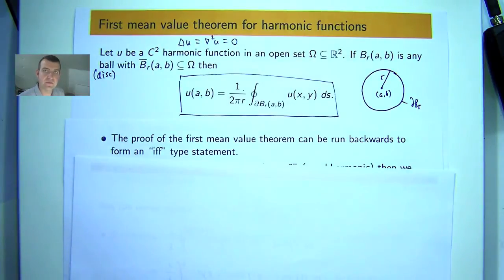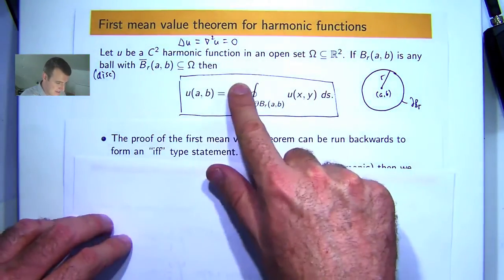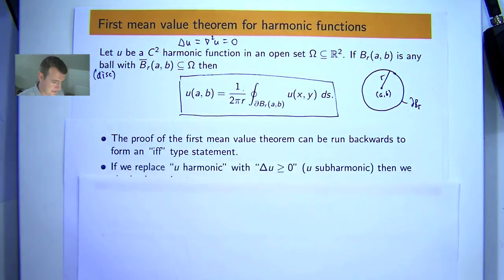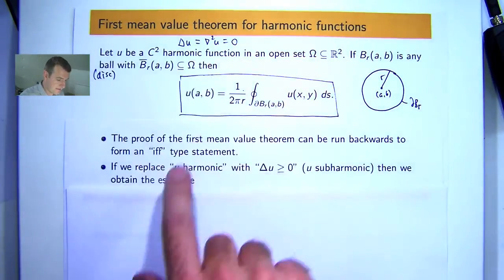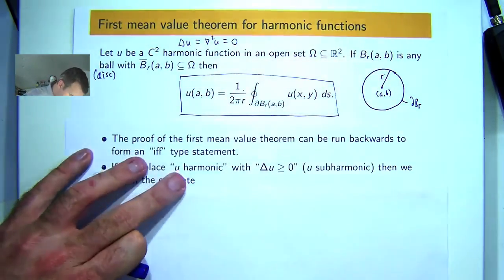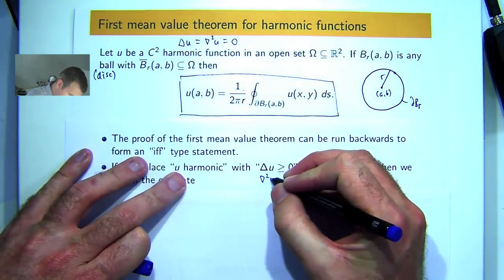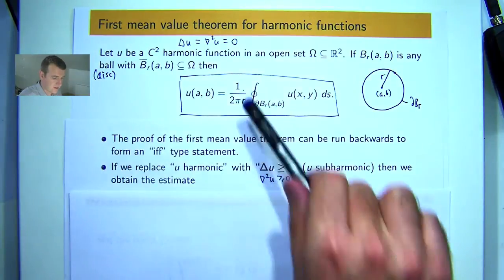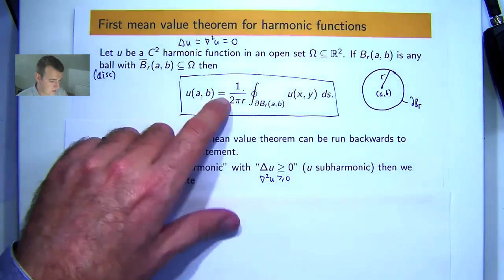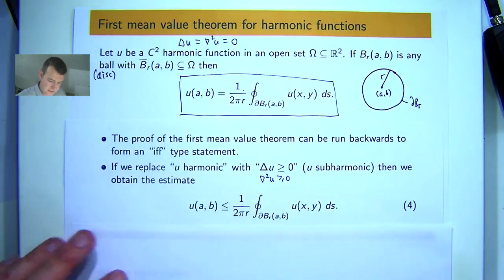The proof of the first mean value theorem can be run backwards. So, you can start with this and show that u, if this is true, then u is harmonic. That would be a good result for you to try to prove. Secondly, if we replace or we put in an inequality here to get a sub-harmonic function, then there's also a result. So, if we don't have necessarily equality here, we have this inequality, we call u a sub-harmonic function, then you basically have an inequality here too.